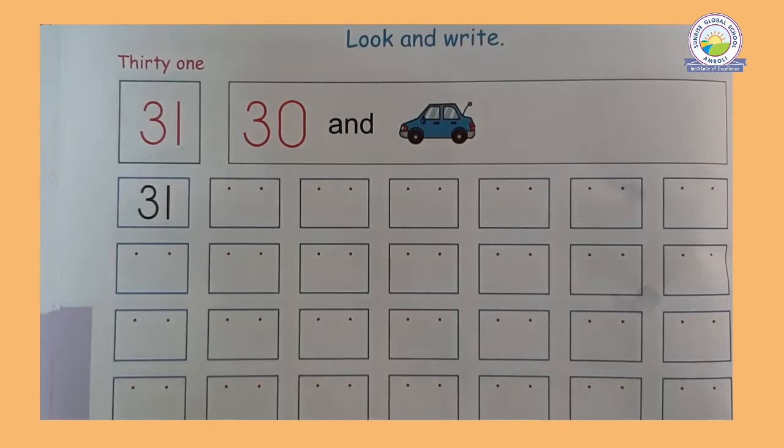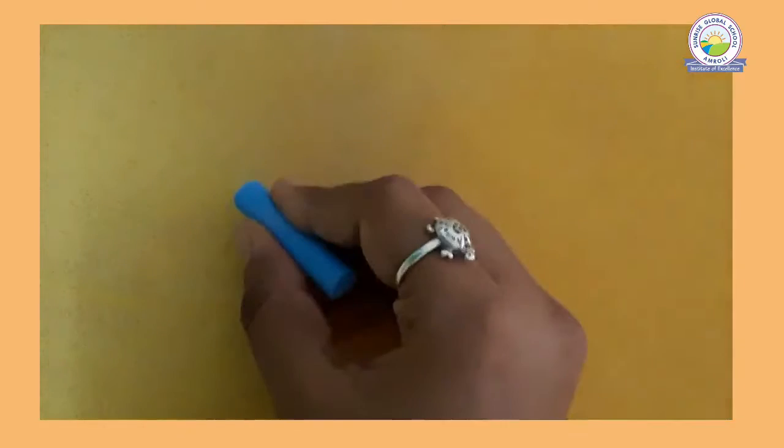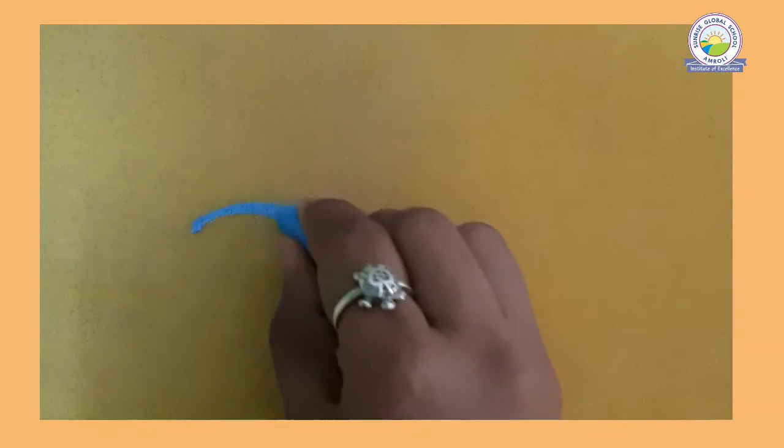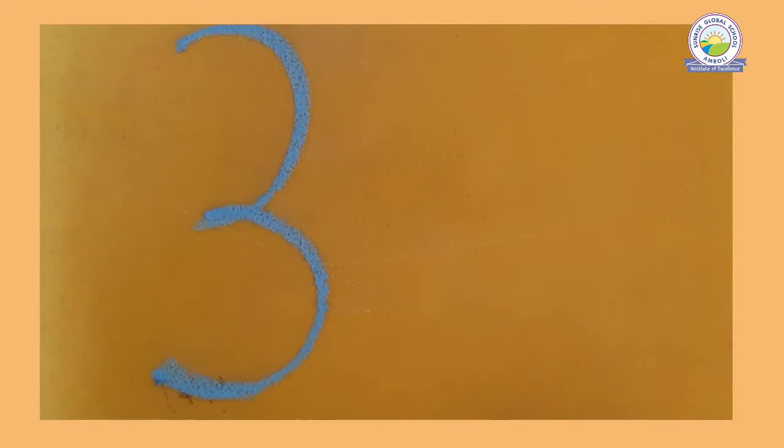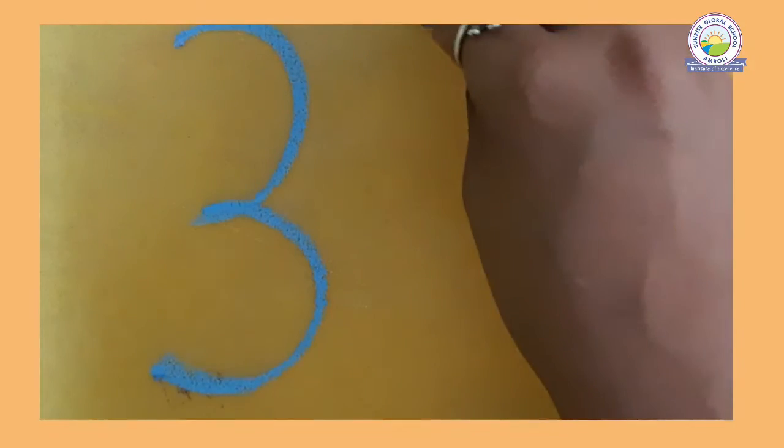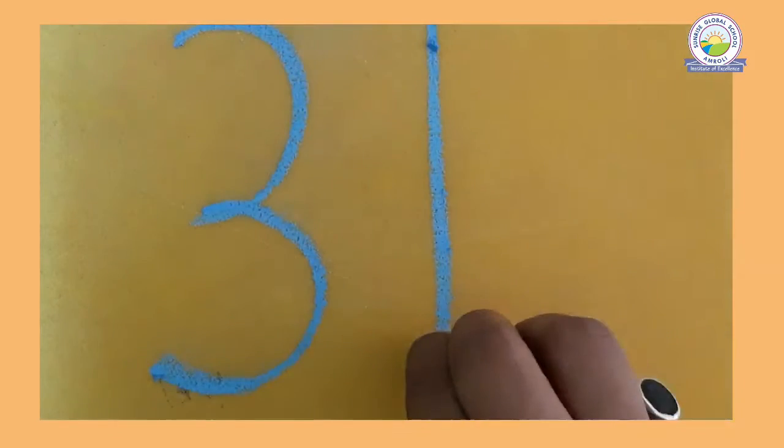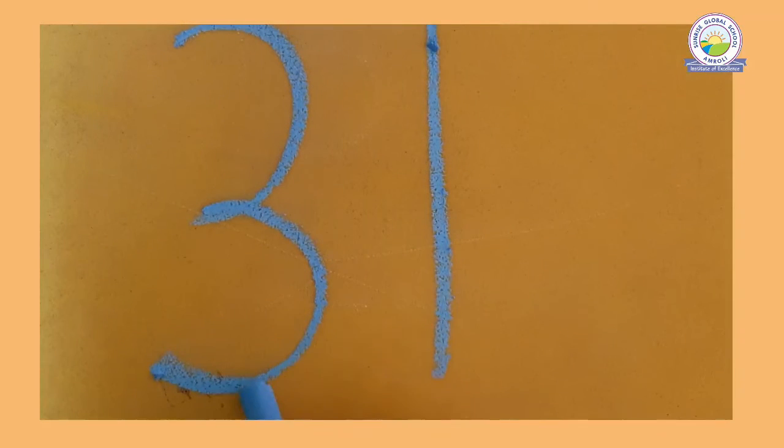So let me show you one small activity. Okay, so now look here what I am writing. Look, half circle, then again half circle. See, look here. Half circle and half circle, then standing line. 3 and 1, 31.